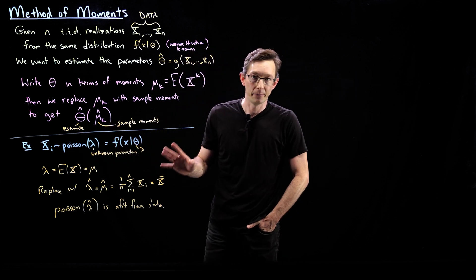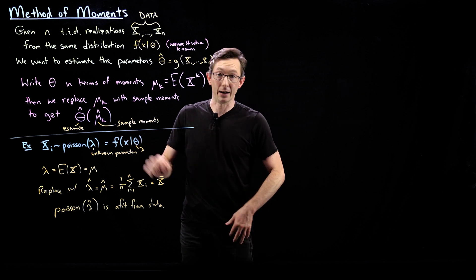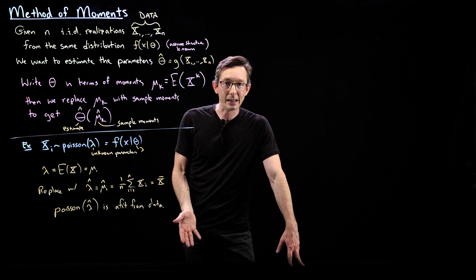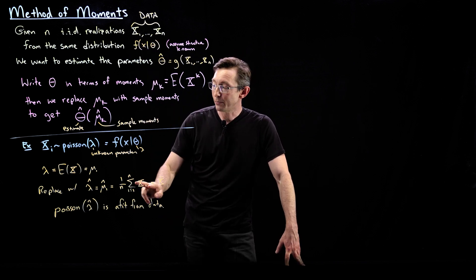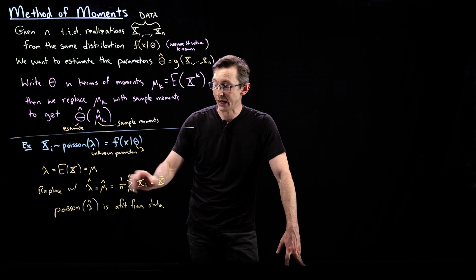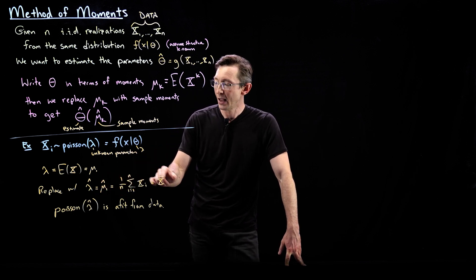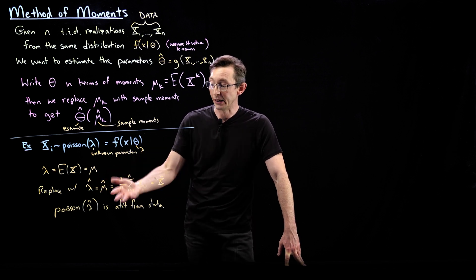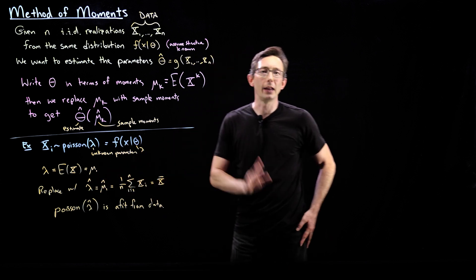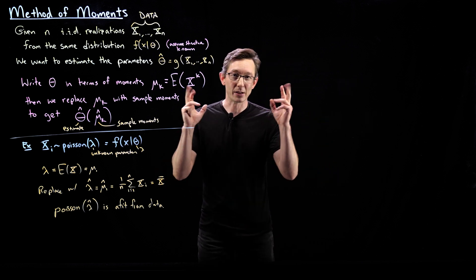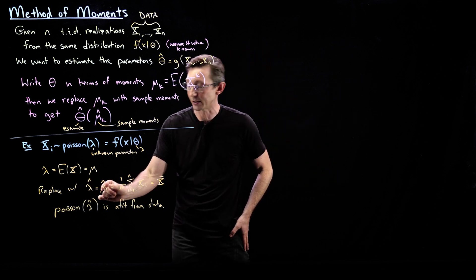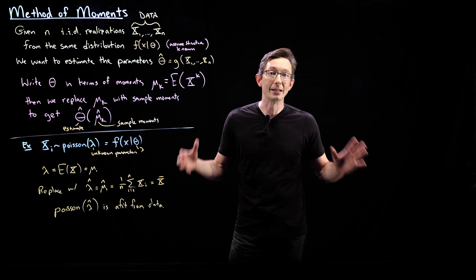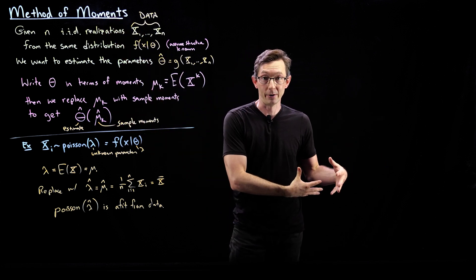We took our distribution, we don't know lambda, but we can write lambda in terms of the moments of the PDF — lambda equals the expectation value of x. I don't know what that is, but I have data. So I compute the sample first moment, which is x̄, and use that as my estimate. We'll show later that as n goes to infinity this is consistent — meaning the estimate based on these moments converges to the true parameter value.